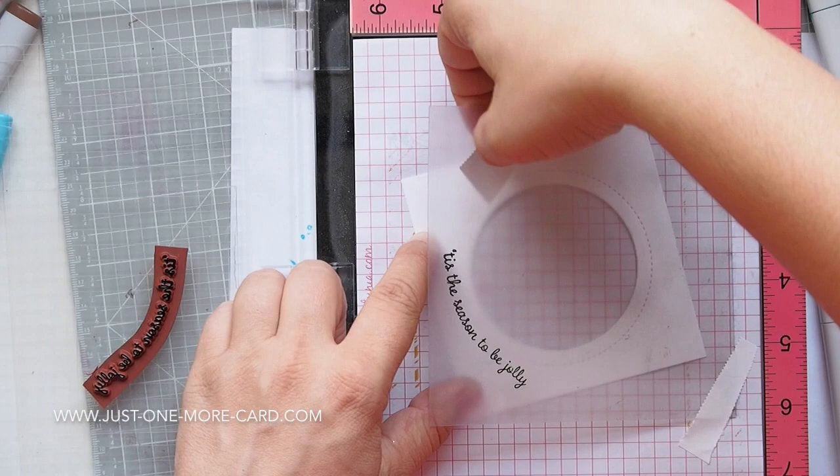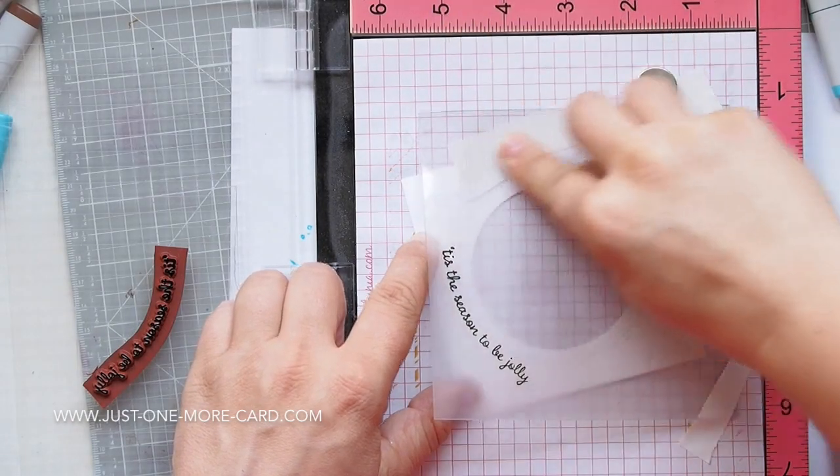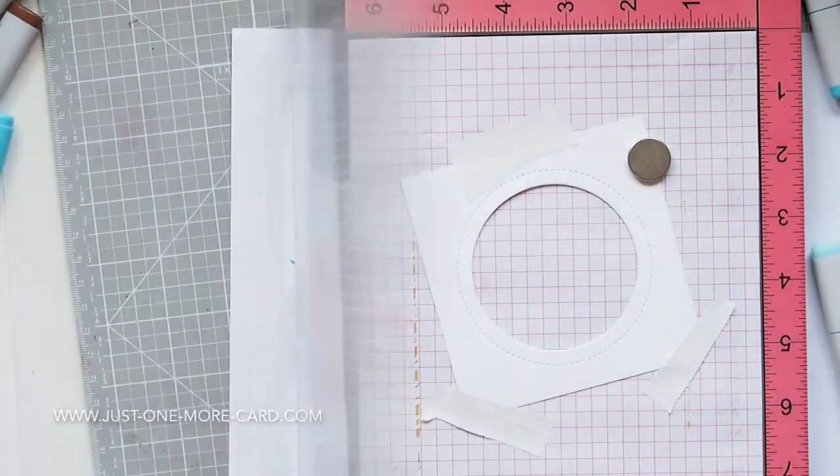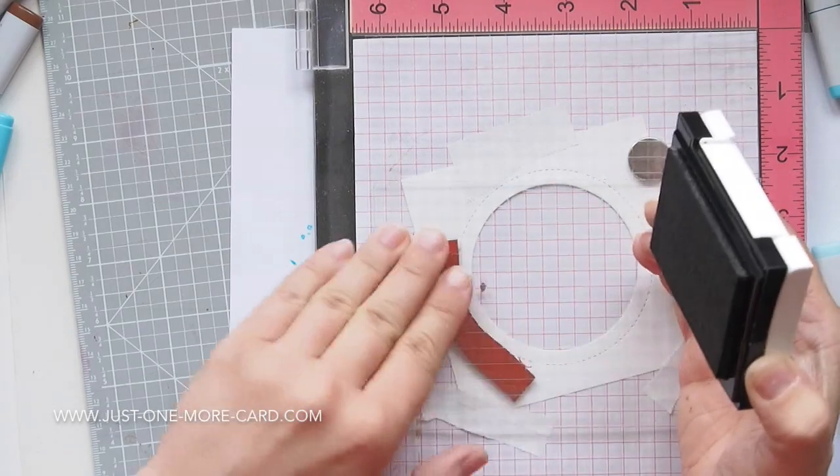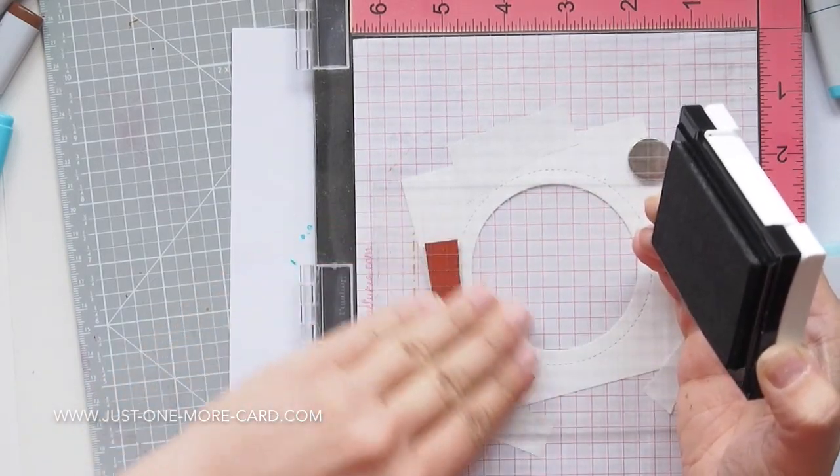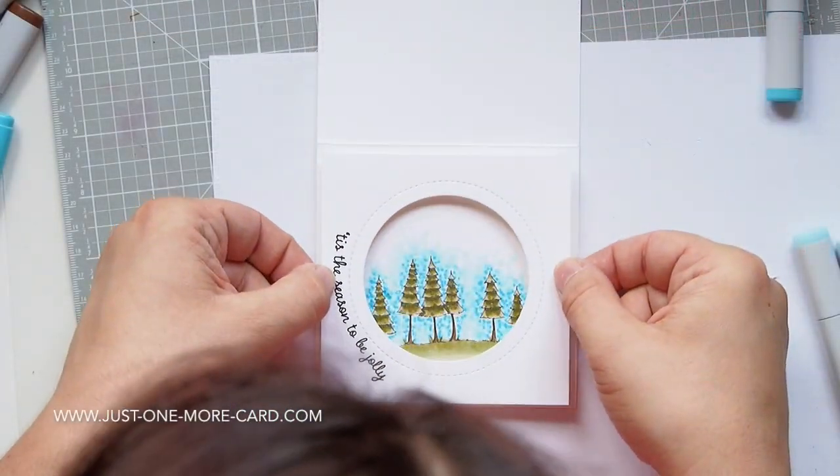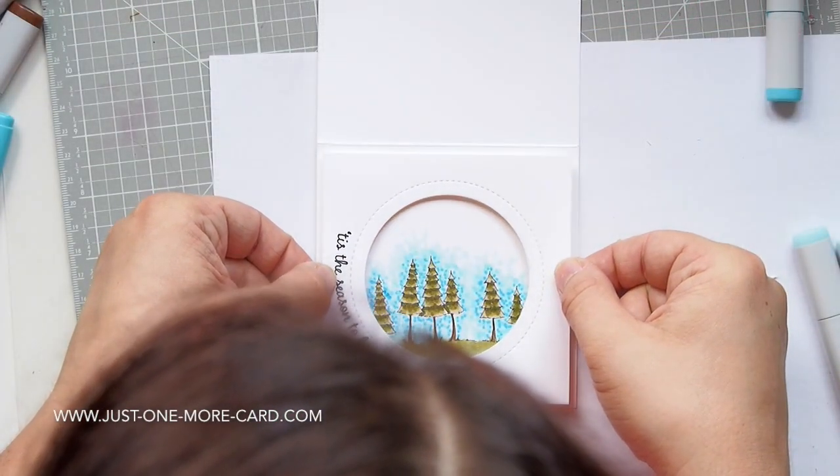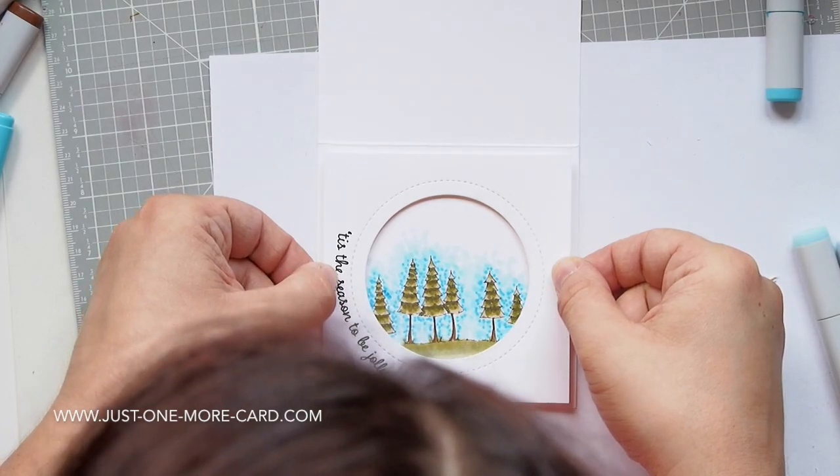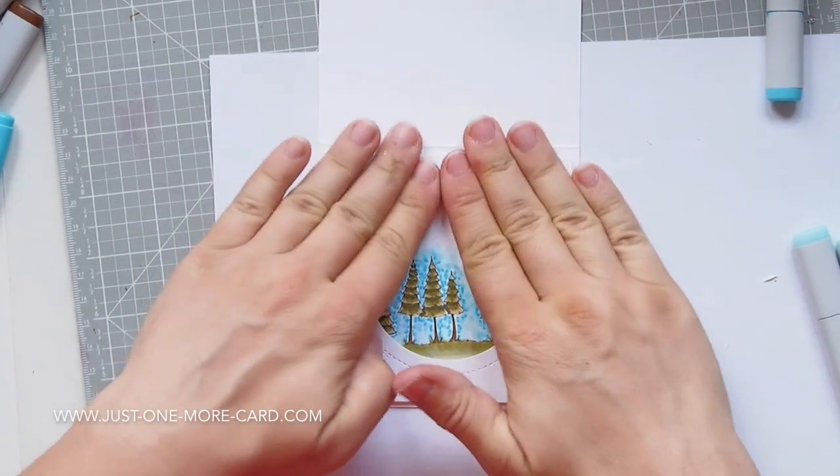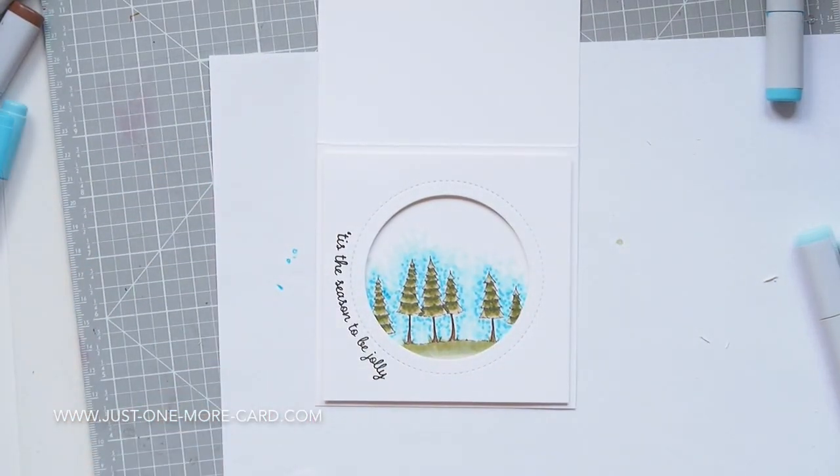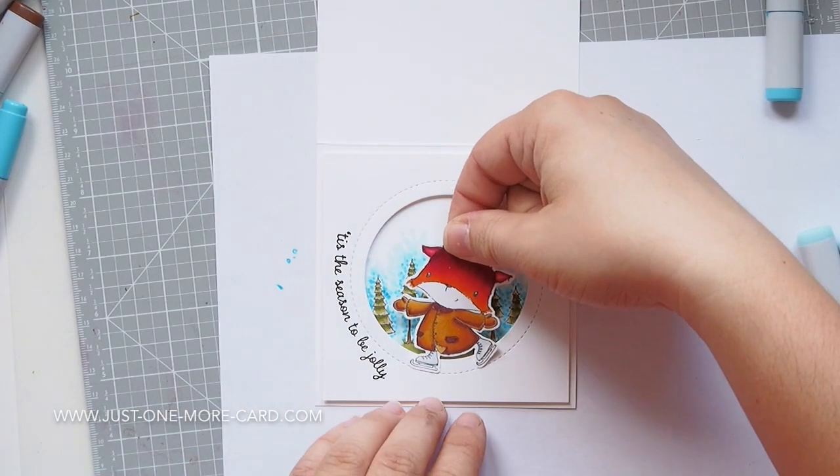I'm using some tape to hold it in place right there, and then I can stamp it. Yes, it's a little complicated, but it looks just awesome. My friend Sonia from Sonia K The Art of Stamping sent me a card once and she had the sentiment curved around the opening like that, and I was like, I need to do that, I so need to do that.